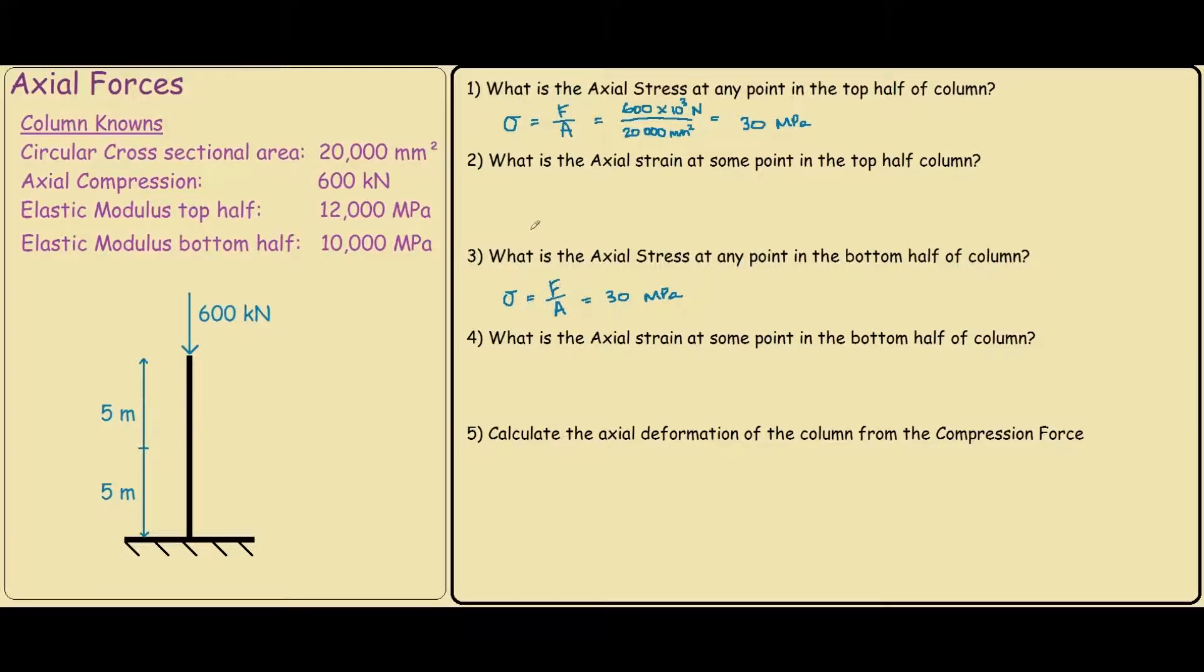Okay let's go back to question 2 where it asks us to calculate the strain. So the formula for strain is epsilon equals stress over elastic modulus. So we worked out the stress was 30 MPa at the top half of the column. And the elastic modulus we are given on the top half is 12,000. So if you calculate this, it would equal 0.0025, or it can be expressed as 2,500 microstrains.